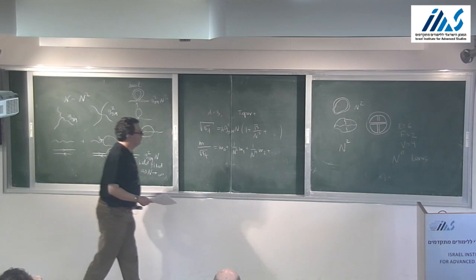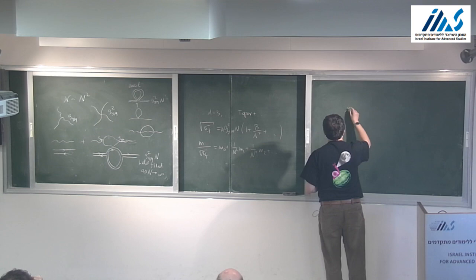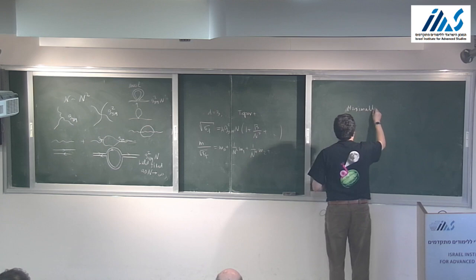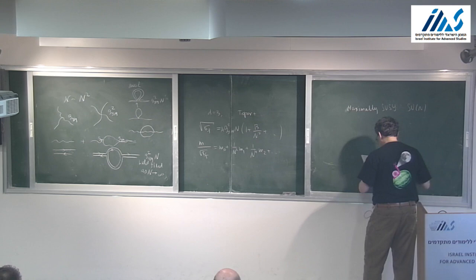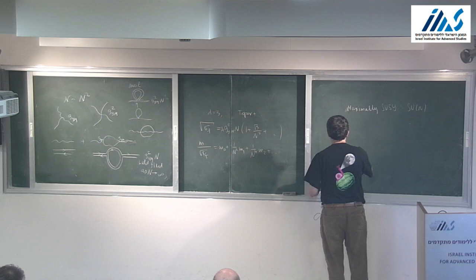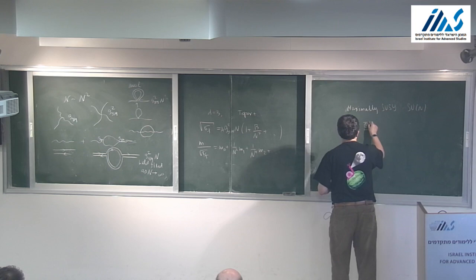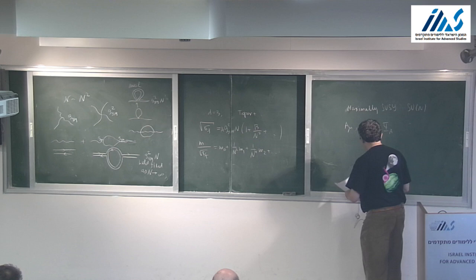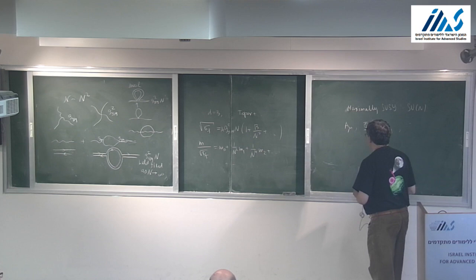Another advantage: consider a totally different theory, N=4 maximally supersymmetric SU(N) Yang-Mills. The action includes A_μ, six adjoint scalar fields φ_i, and adjoint Weyl fermions ψ_a. All fields are in the adjoint, so all the N-counting is exactly the same, and there is a dramatic simplification in the 't Hooft large-N limit.